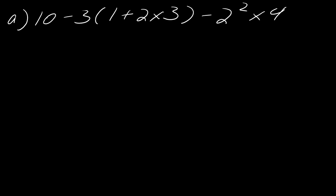Starting with this first one, with the order of operations we have to start with the parentheses first. Inside of this set of parentheses we're going to start with just this 2 times 3. So this will be 10 minus 3, and then this will be 1 plus 6, and then I can just write the rest of this down like that.